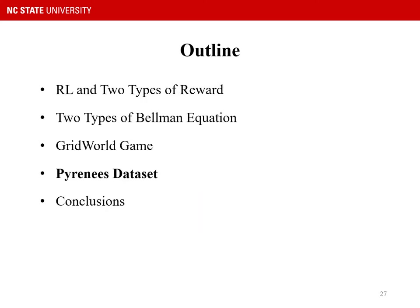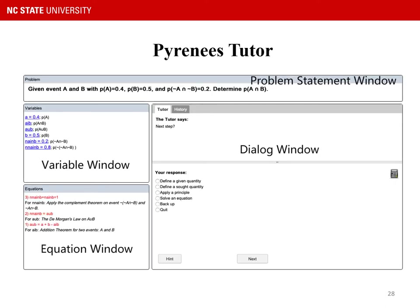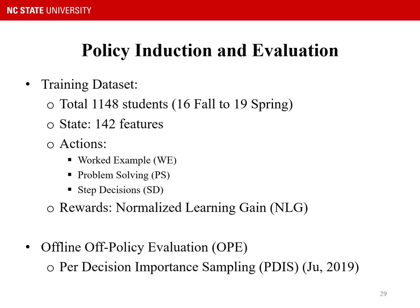Next is the experiment on the Pyrenees dataset. Pyrenees is a web-based intelligent tutoring system for probability, covering 10 major principles such as the complement theorem and Bayesian rules. To induce the critical policy, our training dataset contains more than 1,000 students from 6 semesters. The state contains 142 features. There are three actions: worked example, problem solving, and step decisions. In worked example, the student observes how the tutor solves a problem; in problem solving, the student solves the problem; in step decisions, the student solves a portion of steps while the tutor shows how to solve the others. The reward is normalized learning gain. We applied per-decision importance sampling to evaluate the performance of the critical policies.